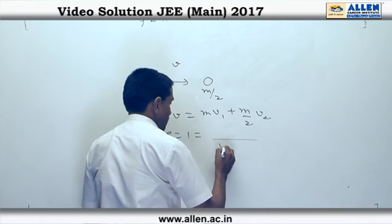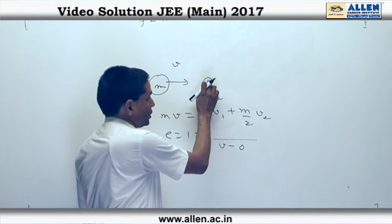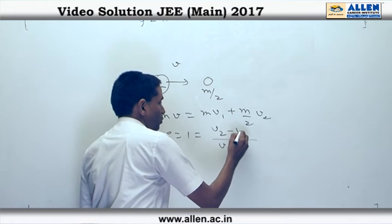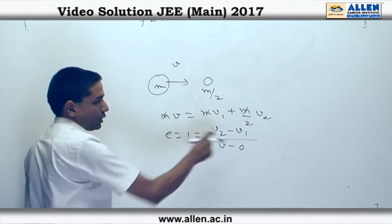The relative velocity before collision is v - 0, and afterwards this is going to move with a higher velocity, so we take v₂ - v₁. We now have two equations in v₁ and v₂.